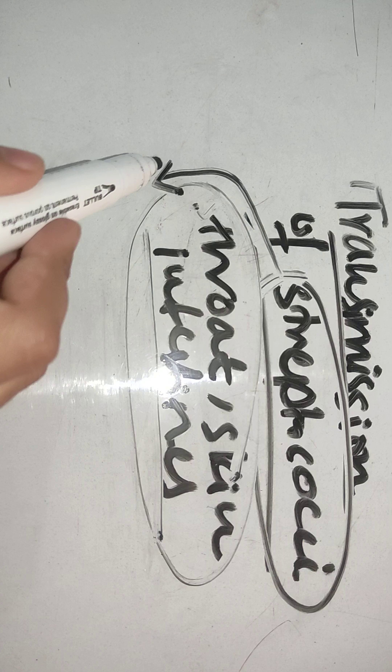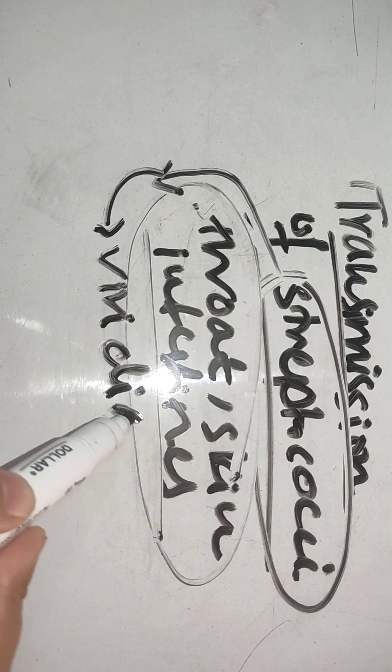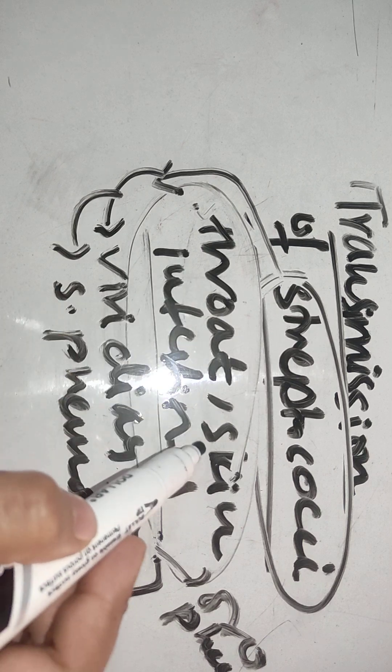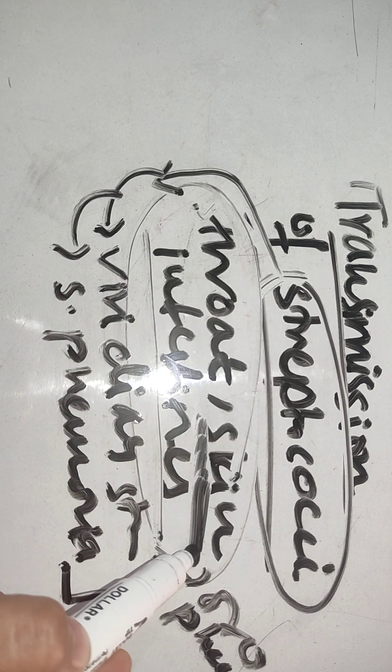As in the previous videos, we will discuss types. Viridans streptococci and Streptococcus pneumoniae are both found chiefly in the oropharynx. Streptococcus pyogenes is found on the skin and in small numbers also in the oropharynx.